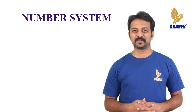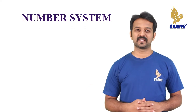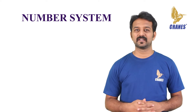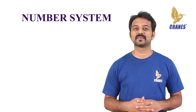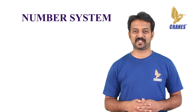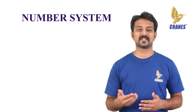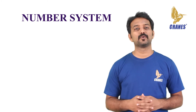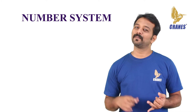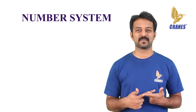Let's now look into number systems and digital electronics. In digital electronics, the number system is used for representing information. The number system has different bases, and the most common of them are the decimal, binary, octal, and hexadecimal.